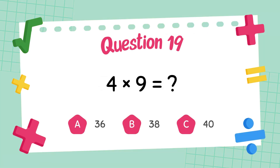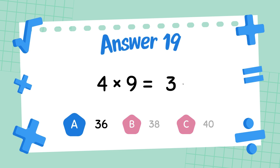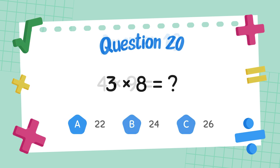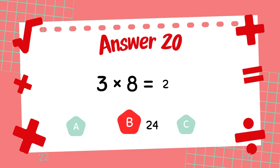What is 4 times 9? The answer is 36. What is 3 times 8? The answer is 24.